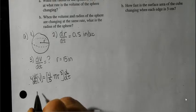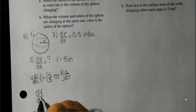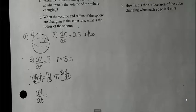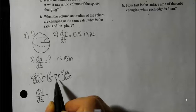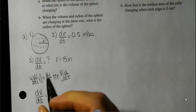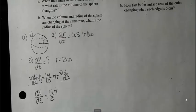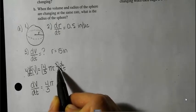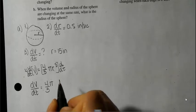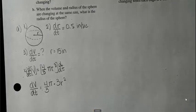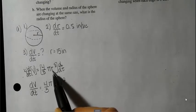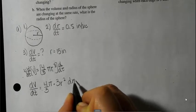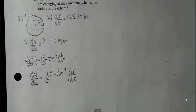The derivative of volume with respect to time is dV/dt. On the right side, four-thirds pi is just a coefficient, so I leave it in front. Then I apply the power rule to r cubed, giving 3r squared, and then chain rule it — because I'm differentiating with respect to time and this is r — I get dr/dt. So: dV/dt equals four-thirds pi times 3r squared times dr/dt.